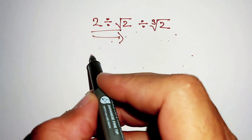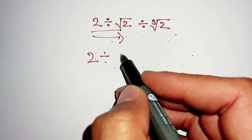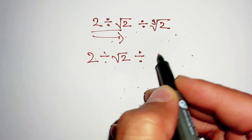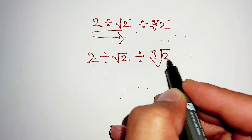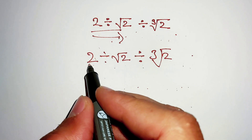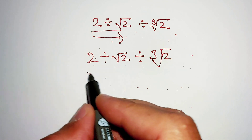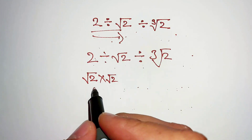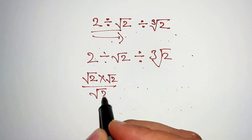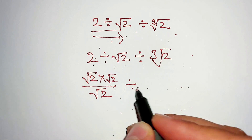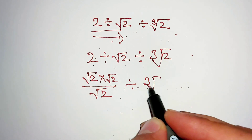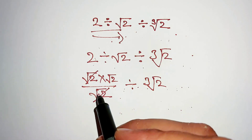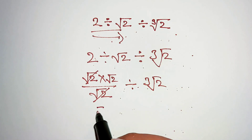First we will solve this part of the expression: 2 divided by square root of 2. We can write 2 as square root of 2 multiplied by square root of 2, then divided by square root of 2. This square root of 2 cancels with the other square root of 2, leaving square root of 2 divided by cube root of 2.